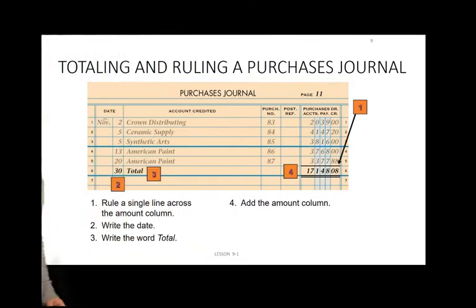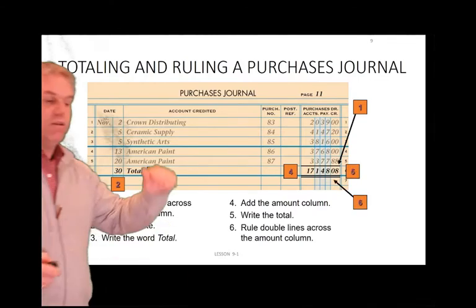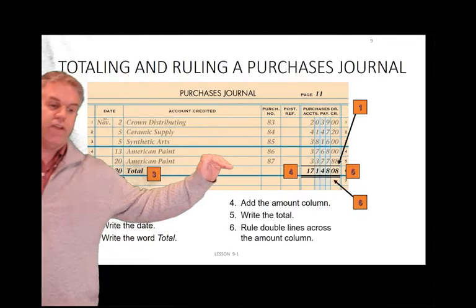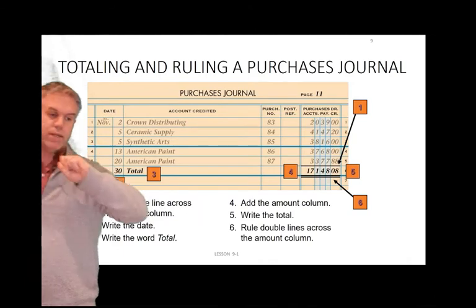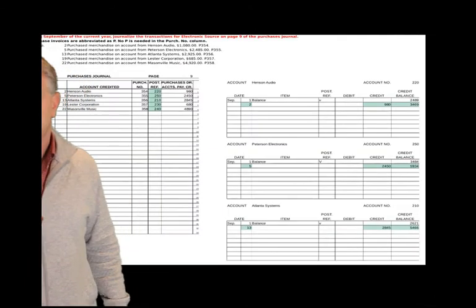There are your transaction steps. A single line means you've added. A double line means you have verified and proved.